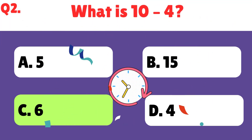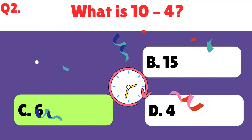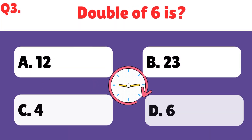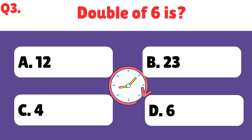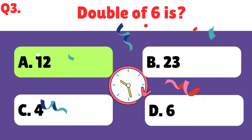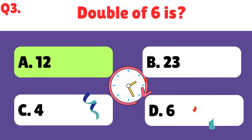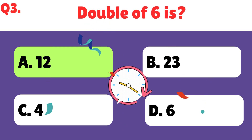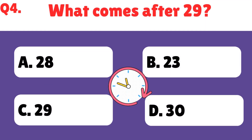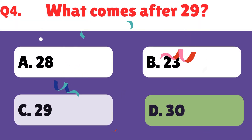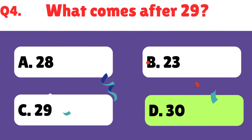What is double of 6? Double of 6 is 12. What comes after 29? 30 comes after 29.